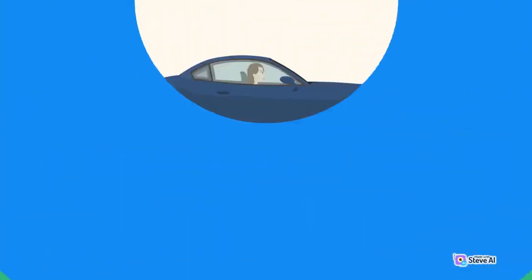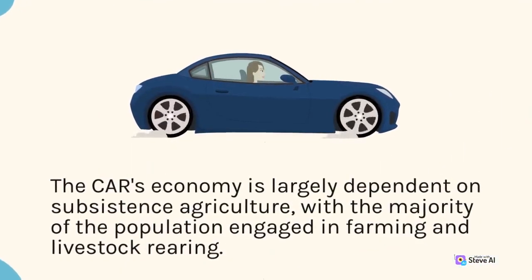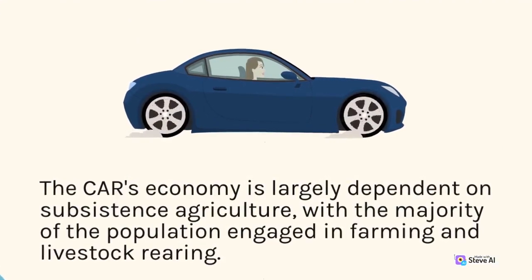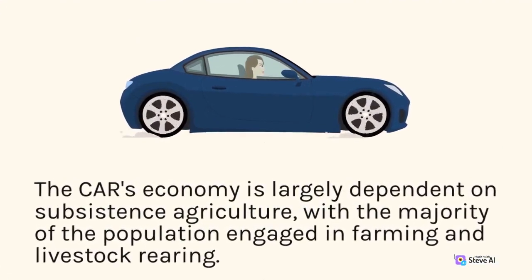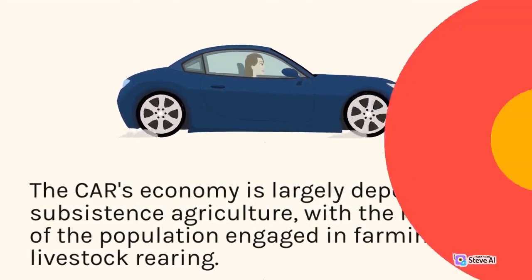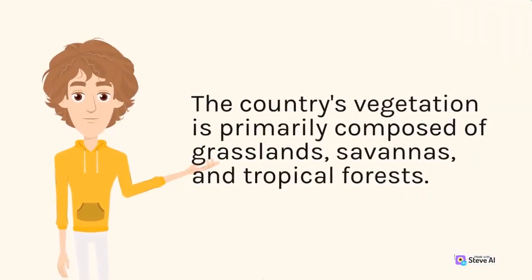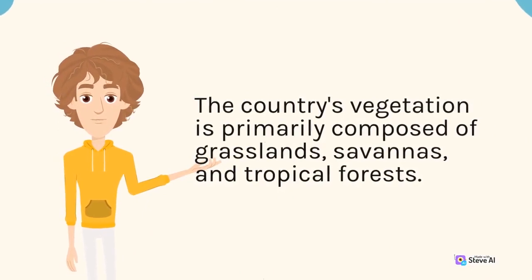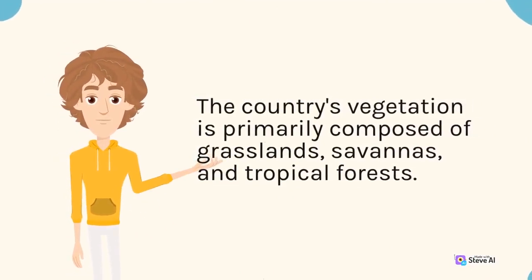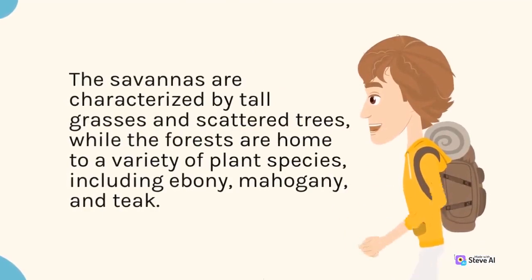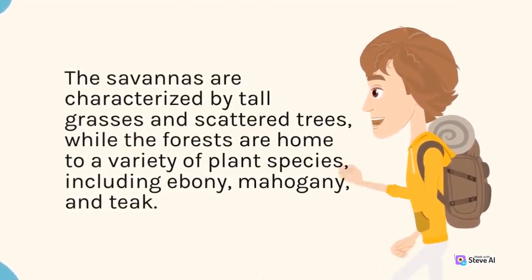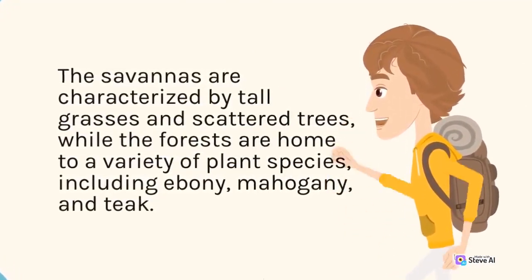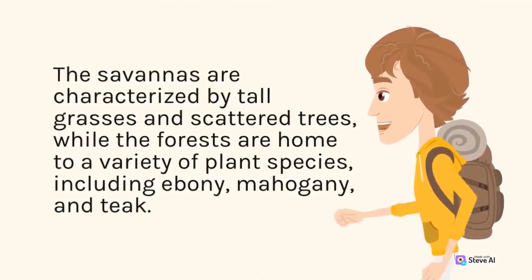The CAR's economy is largely dependent on subsistence agriculture, with the majority of the population engaged in farming and livestock rearing. The country's vegetation is primarily composed of grasslands, savannas, and tropical forests. The savannas are characterized by tall grasses and scattered trees, while the forests are home to a variety of plant species, including ebony, mahogany, and teak.